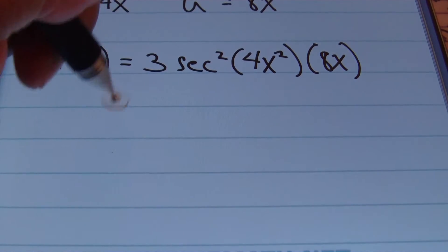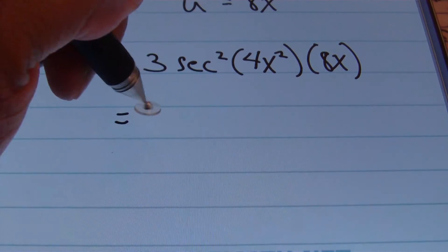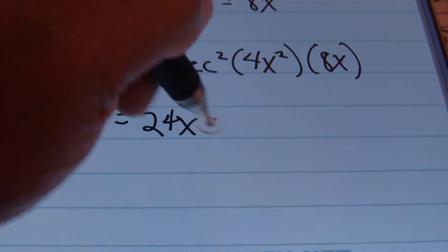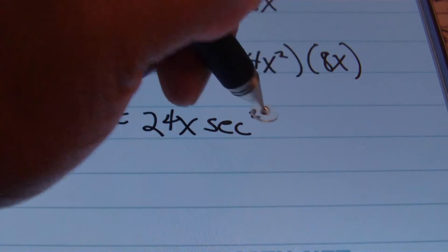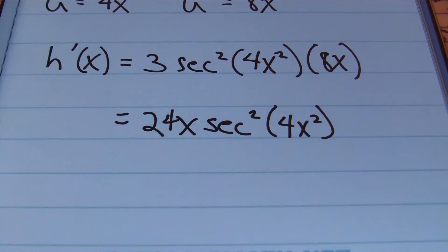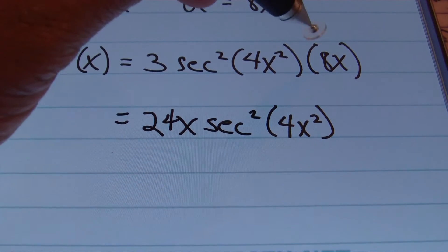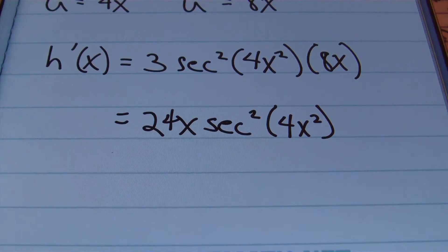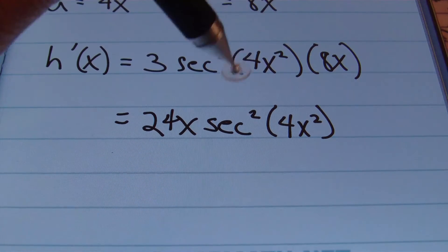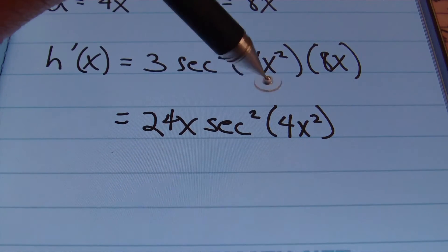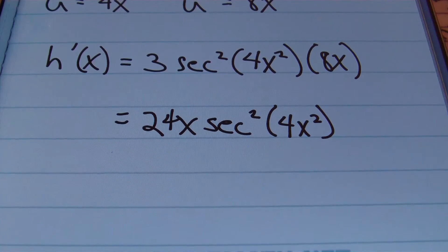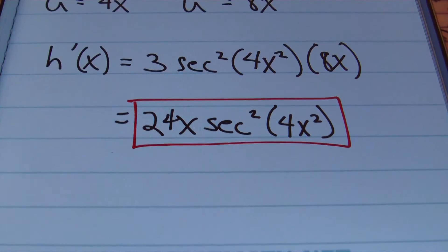Simplifying, 3 times 8x gives us 24x, and we bring down secant squared of 4x squared. So the final answer is 24x times secant squared of 4x squared.